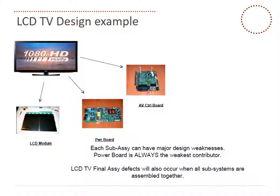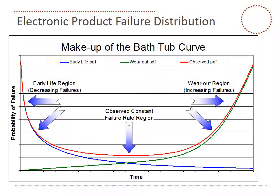Each sub-assembly will have its major design weaknesses. The power supply will generally be a key contributor. When we put the final assembly together, defects will occur in the process when all the subsystems are assembled. So clearly, we find defects in the process and we have yield levels, but that means there are inherent latent defects waiting to happen. We want to use the yield data to predict our warranty failure rate. This case study shows we have our bathtub curve and we are very interested in early life — on LCD TVs and home electronics, that generally is a six to nine month period.